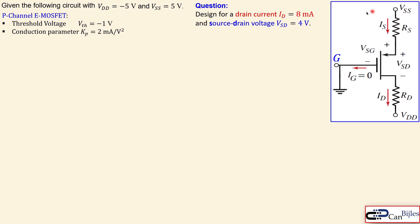Here is the circuit. We have a p-channel enhancement MOSFET with a source resistor RS and a drain resistor RD. There are two DC voltage sources: VSS at plus five volts and VDD at minus five volts. The gate is directly connected to ground.